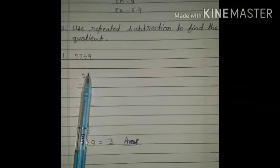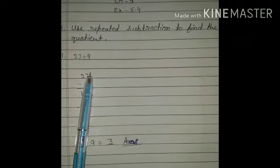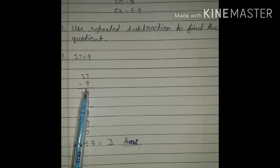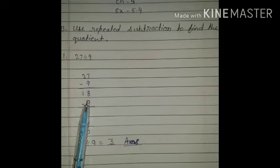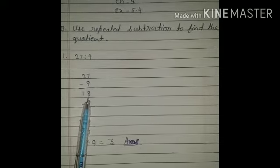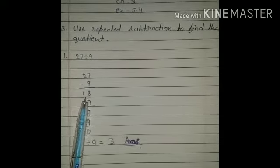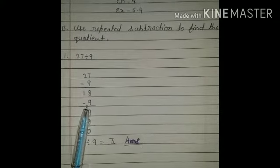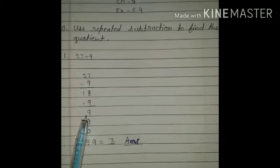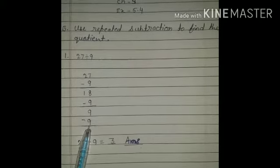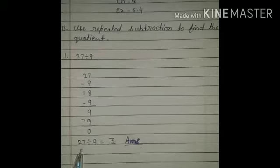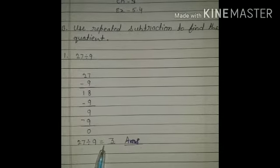First question: 27 divide by 9. Then 9 will be subtracted, then answer 9 will be subtracted again, then answer 0. So 27 divided by 9 is equal to 3.